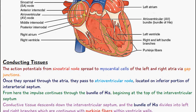The action potential initially begins in the sinoatrial node and it spreads to the myocardial cells of the left and right atria. It is able to spread through the myocardial cells via gap junctions.